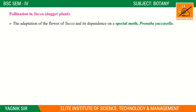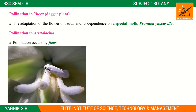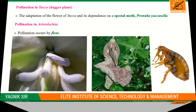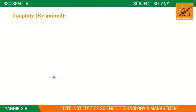A special adaptation exists in Yucca flowers and their dependence on a special type of moth called Pronuba (Tegeticula). This is an exception case in entomophily where the pollination occurs exclusively through this specific moth.